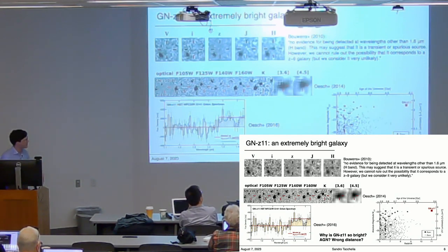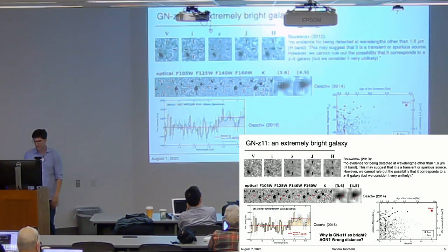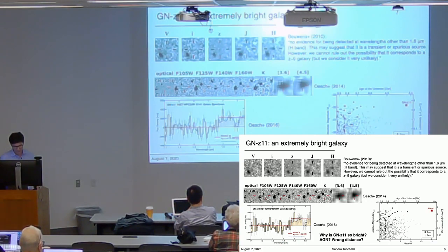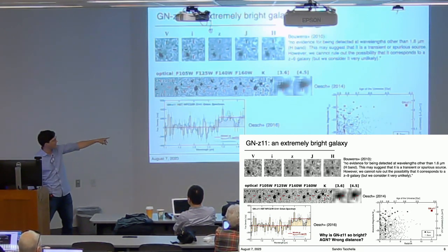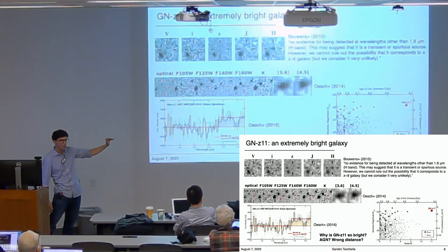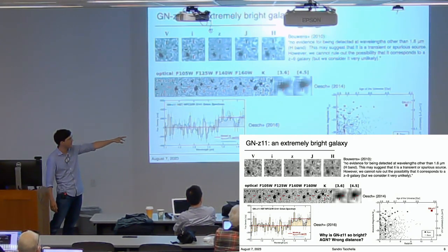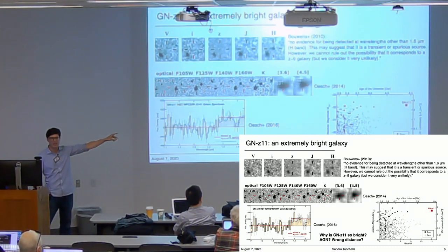Then with Pascal Oesch's work it was put back onto the candidate list, particularly with Spitzer IRAC detections and K-band detection, and then with the grism redshift placing it around redshift 11. The unusual thing about GNZ-11 is that it is at very high redshift and really, really bright—its luminosity is about three times L* at redshift 7. So it is really an outlier.